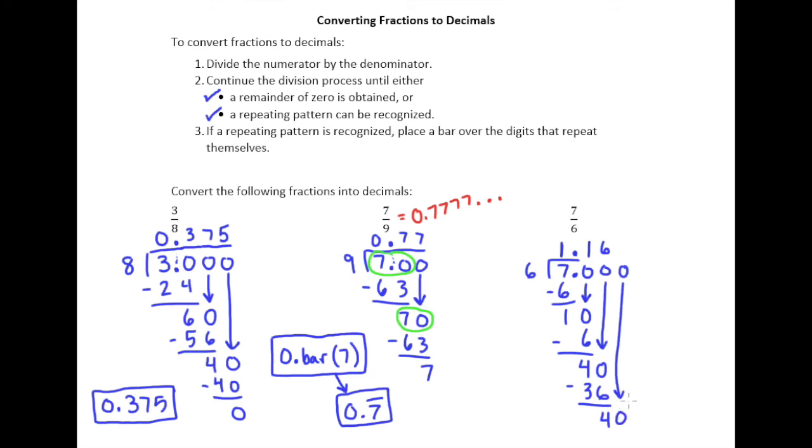Six goes into 40 six times. And so what's happening here is we're just getting the same remainder over and over. At this point right here, I have the remainder of 4, followed by the remainder of 4, and that's causing this 6 to just come up over and over. And there's no reason that this pattern's going to stop.